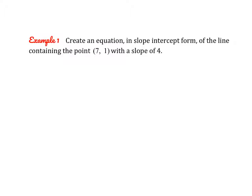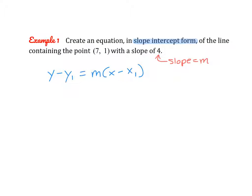Here they ask us to create an equation in slope-intercept form — that will be our final answer — of the line containing the point (7, 1) with a slope of 4. We cannot use slope-intercept form because we don't know the y-intercept, but we can use our new point-slope form. So I'm going to write the formula: y minus y1 equals m times x minus x1. We need three things: the slope, x1, and y1. Our slope is 4, and the given point gives us x1 = 7, y1 = 1.